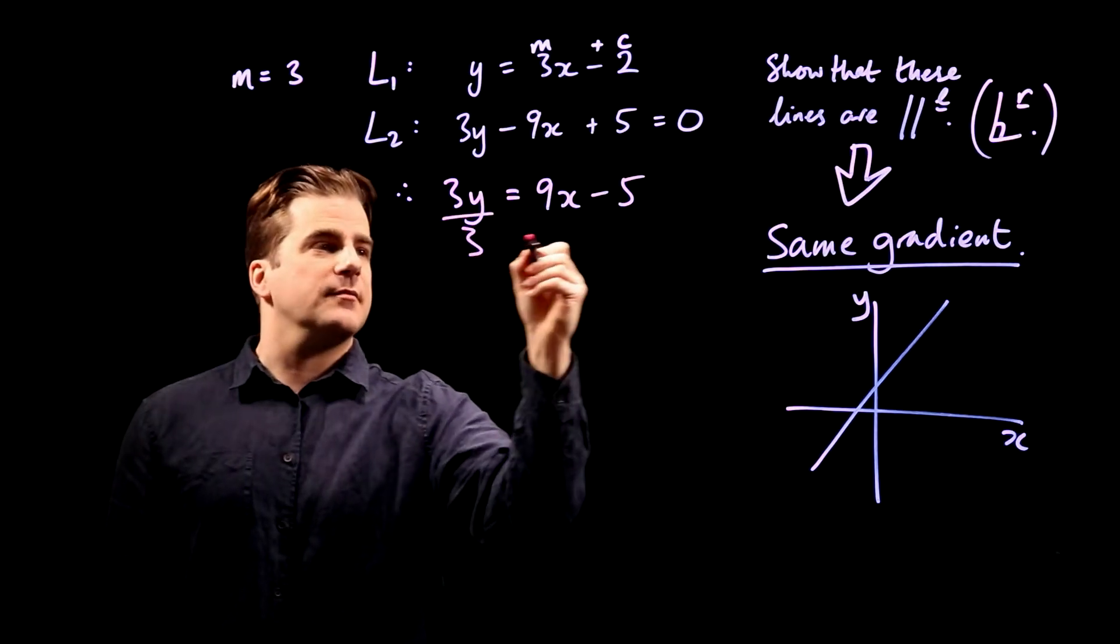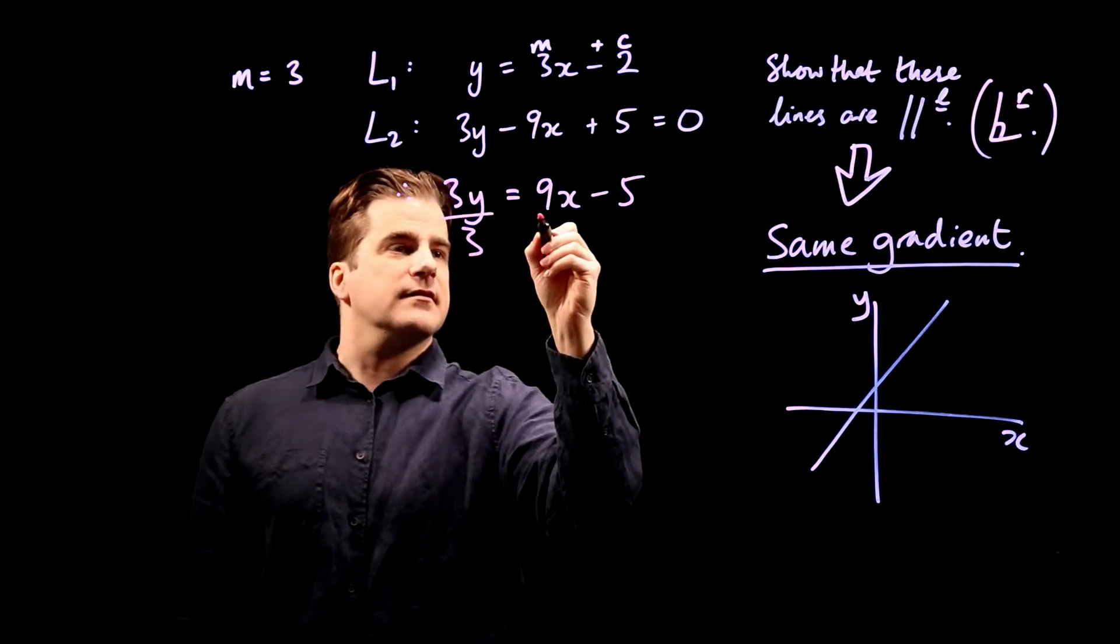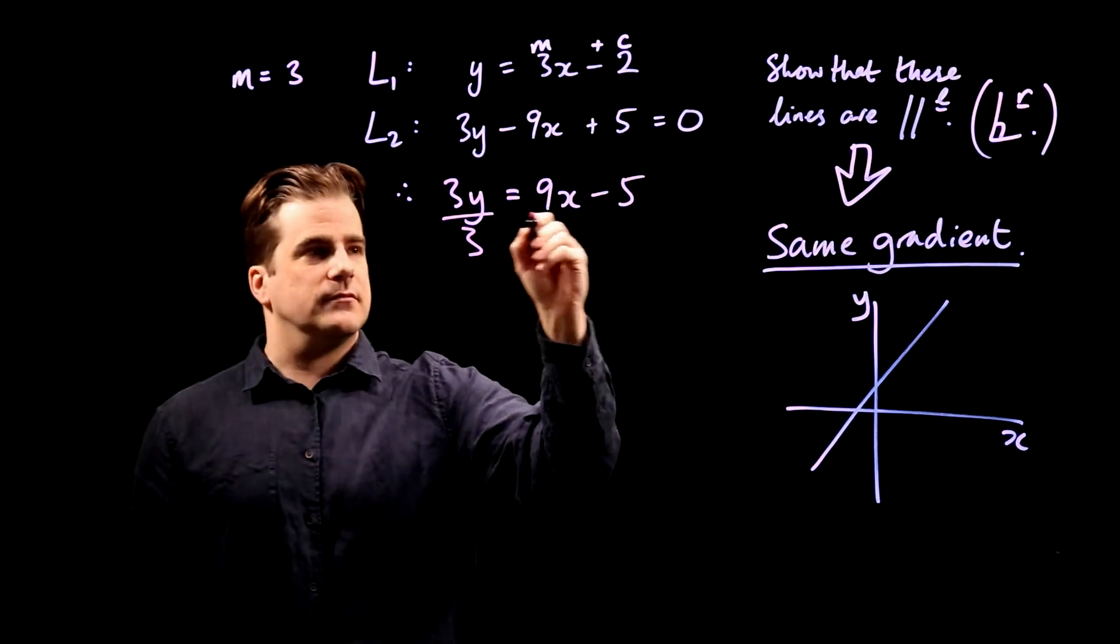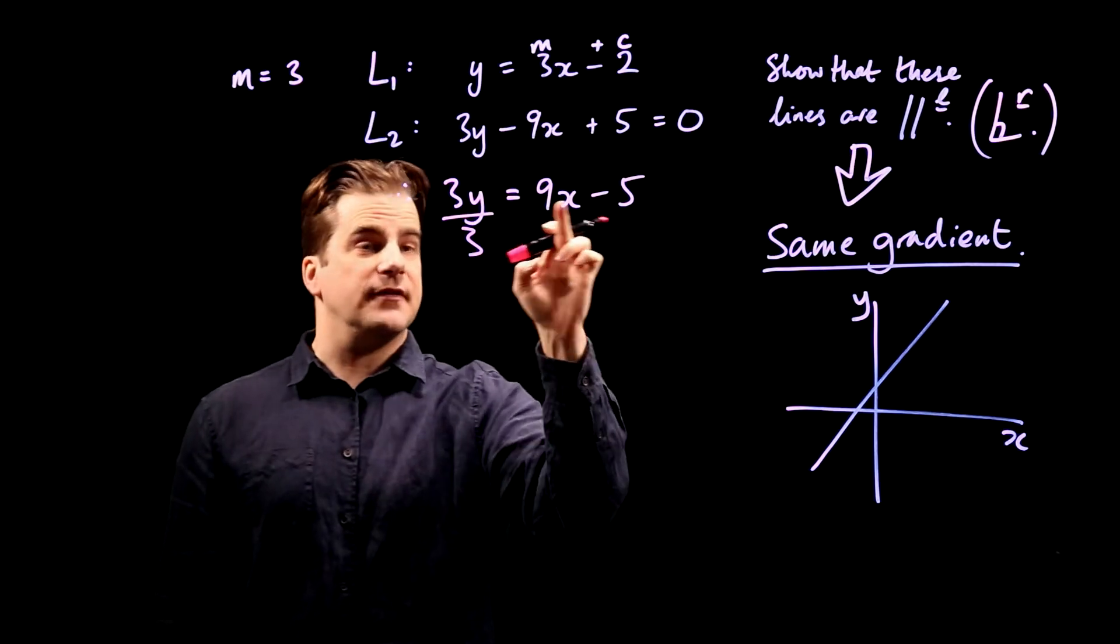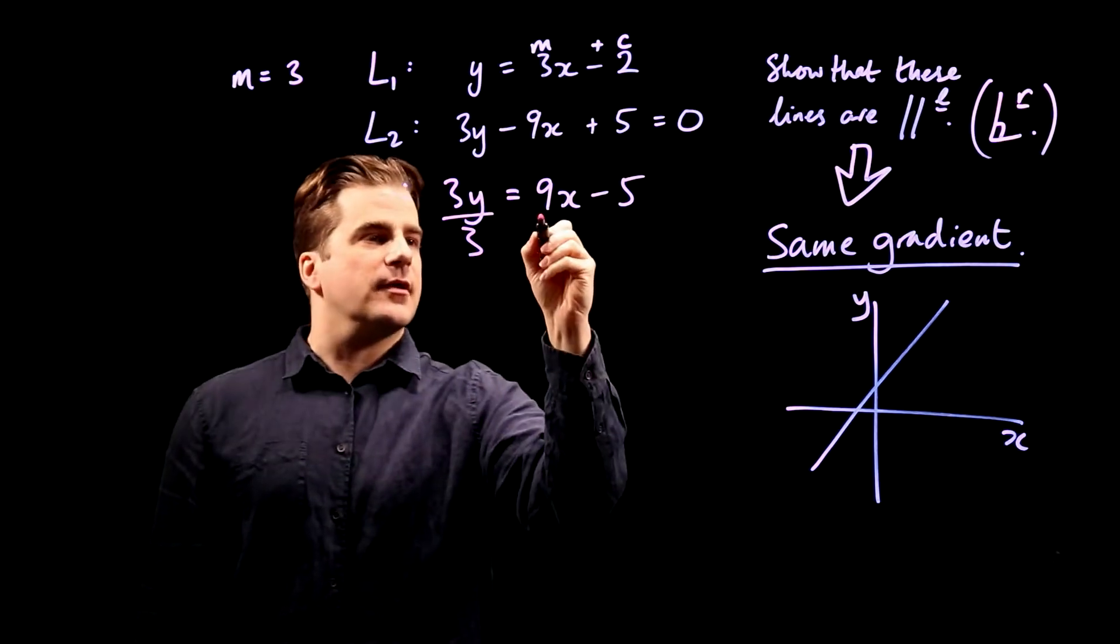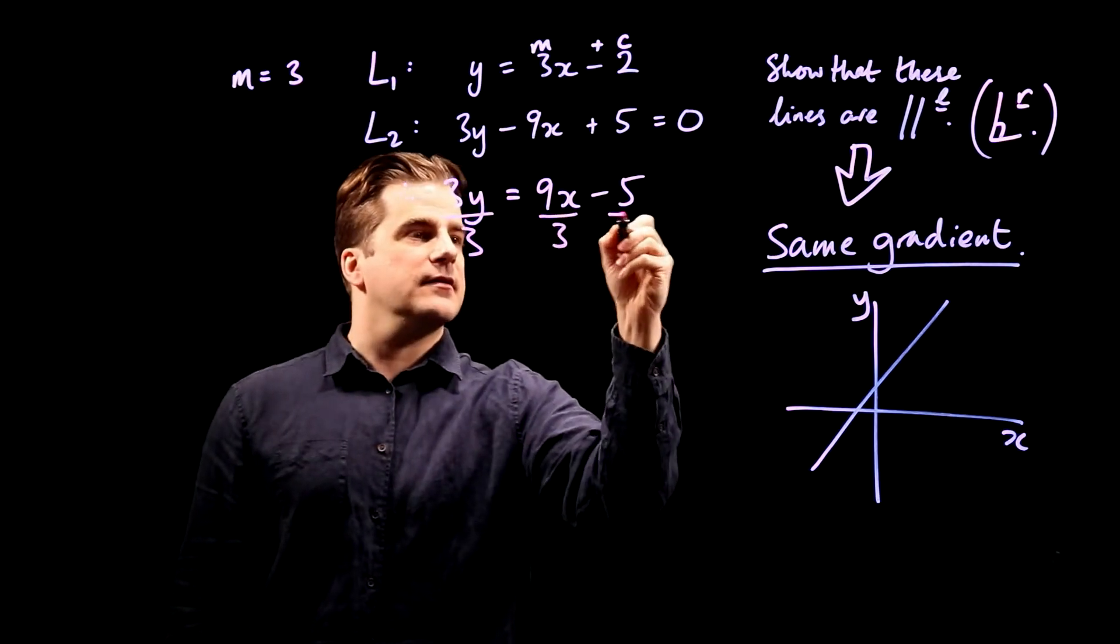So divide that side by 3, and by dividing the whole side by 3, it's the same as dividing each individual term by 3. So I'm going to write it like that.